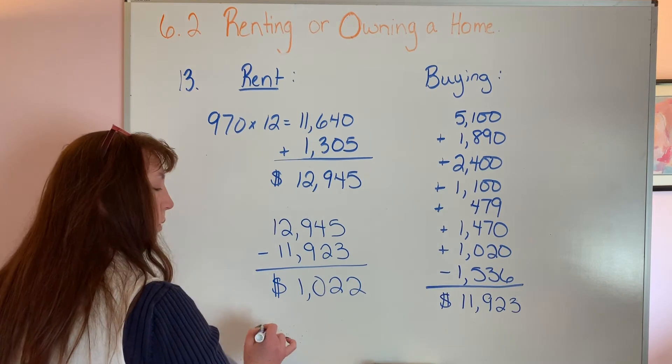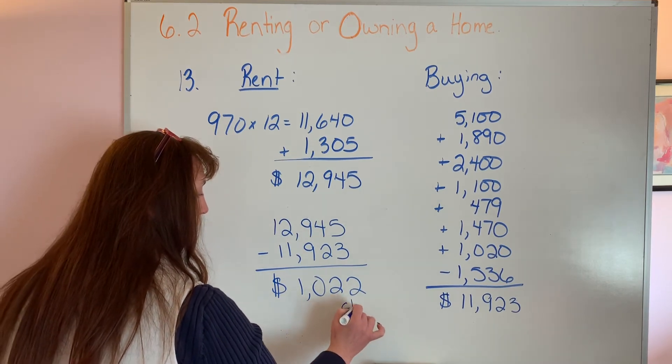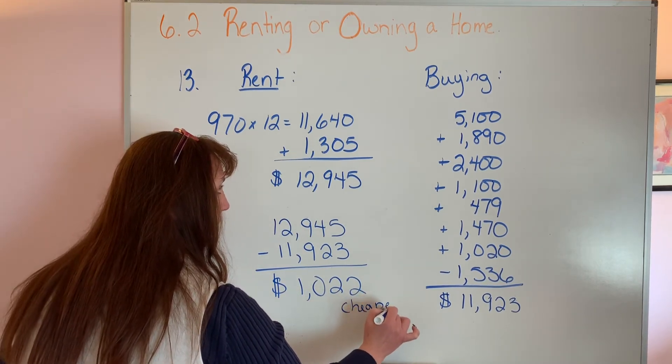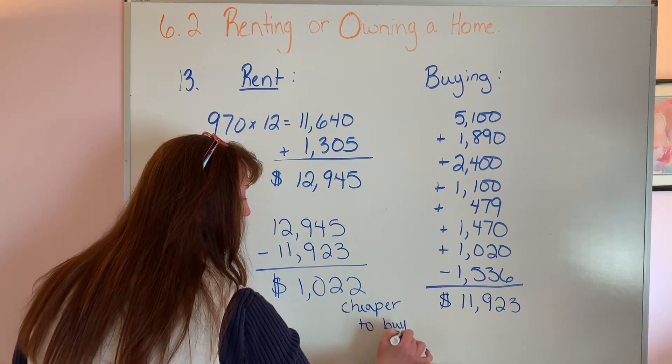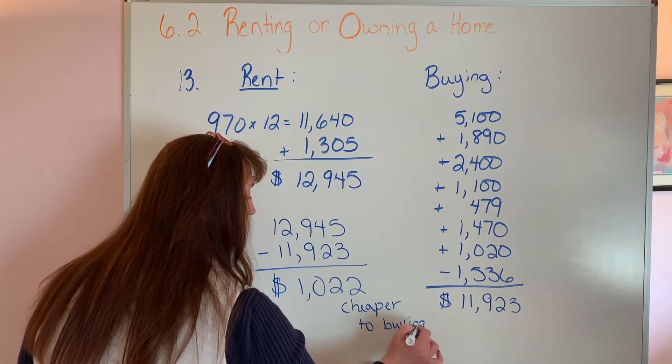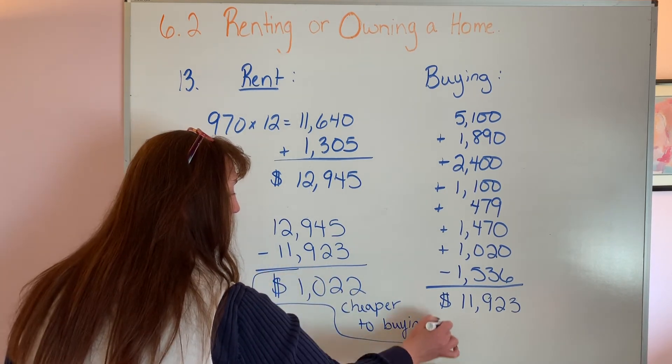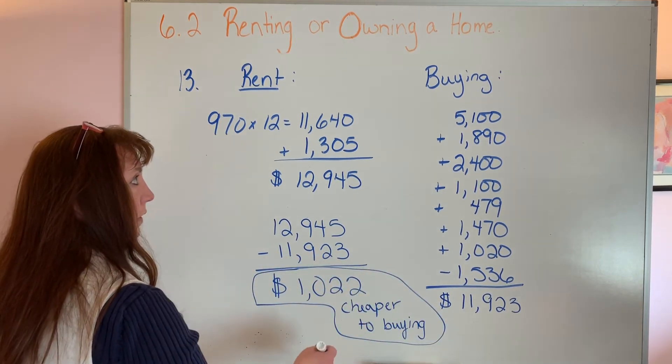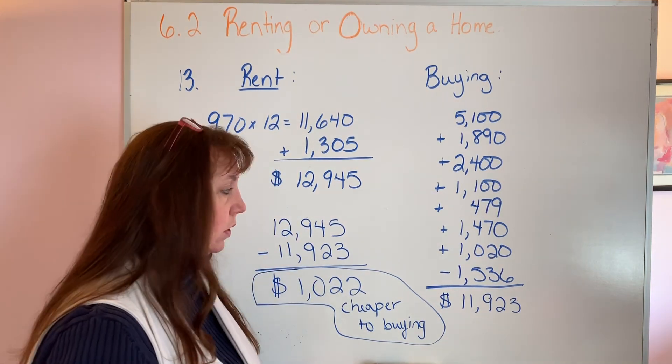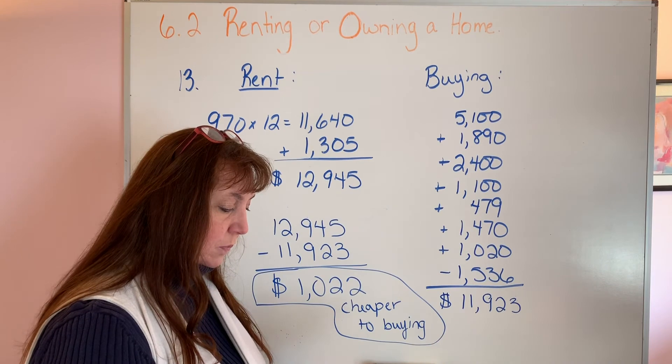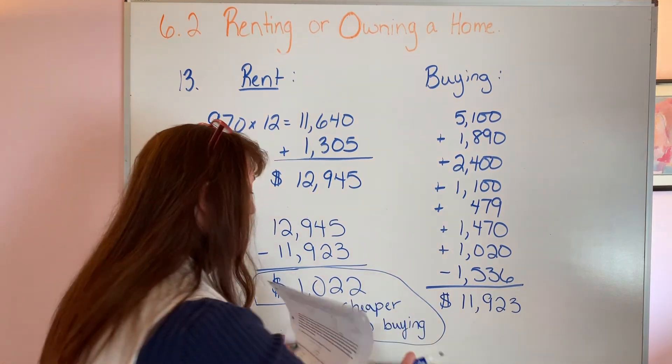These are all estimates. If something breaks down and you own your own home, you do have to fix it, whereas renting, if something breaks, you can call the landlord and they will fix it for you.